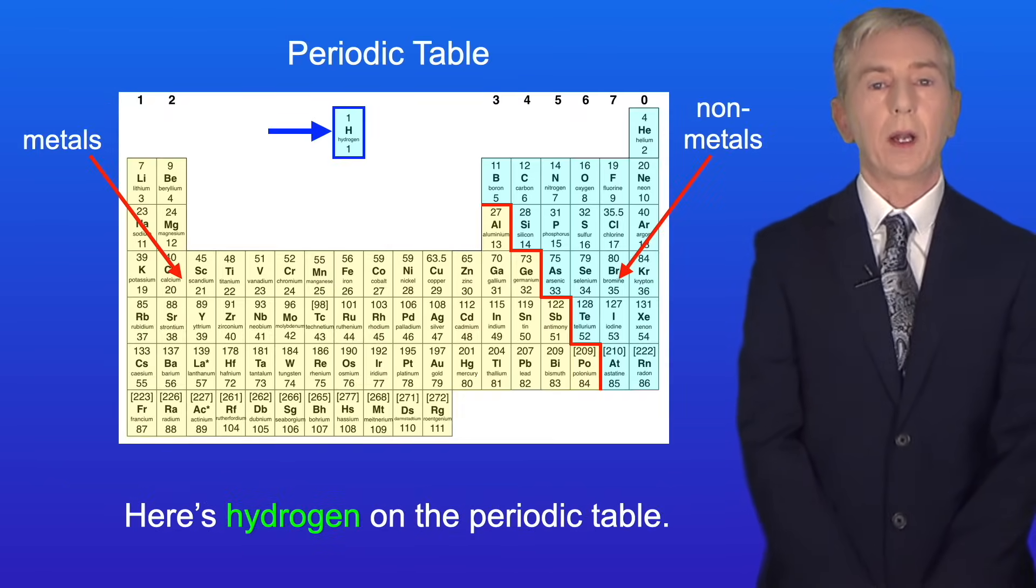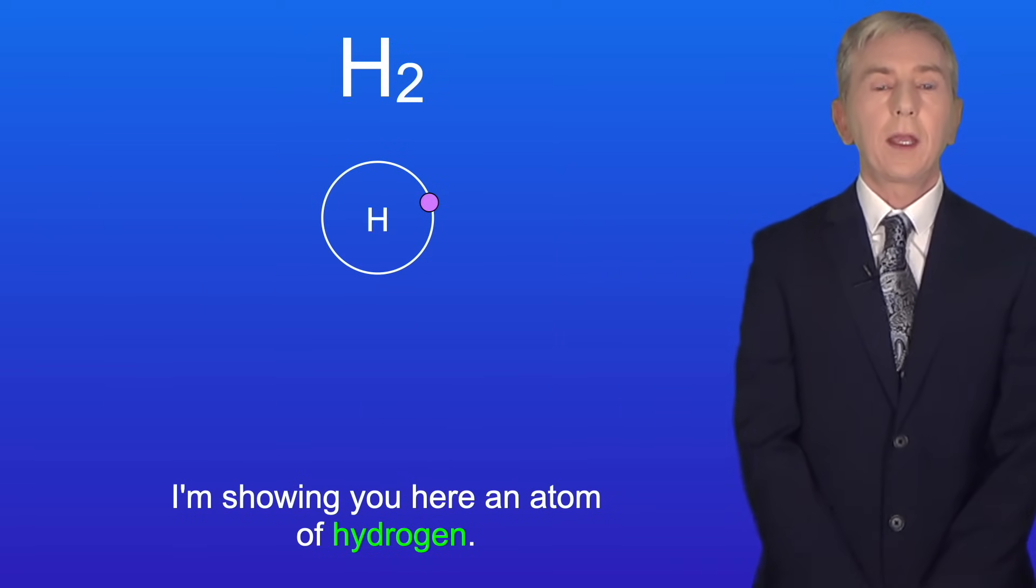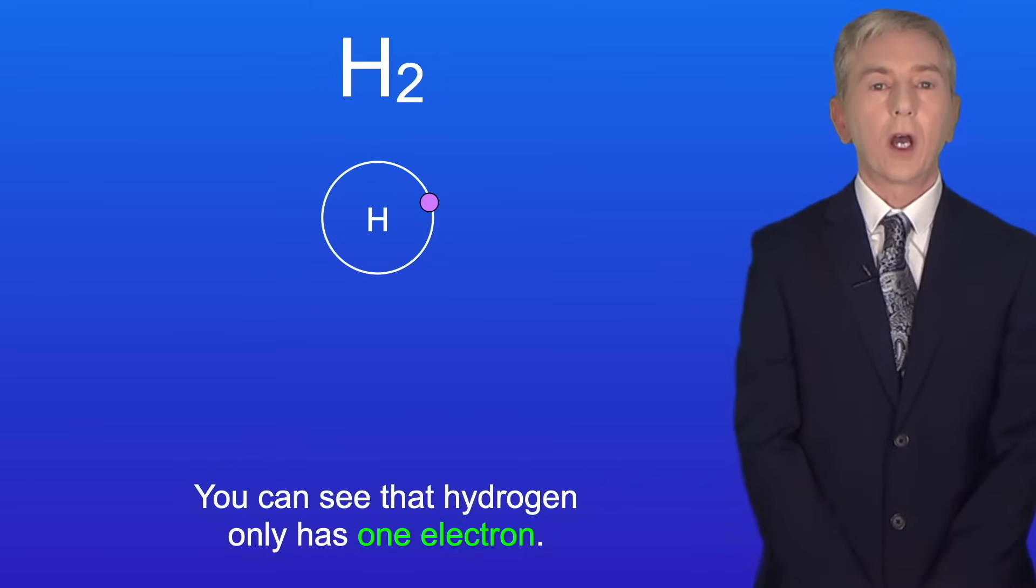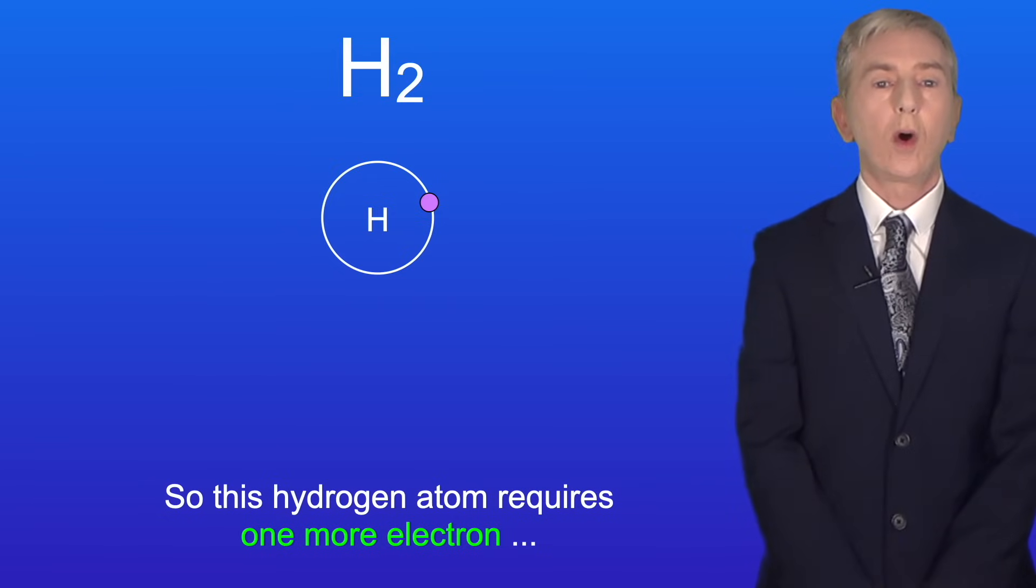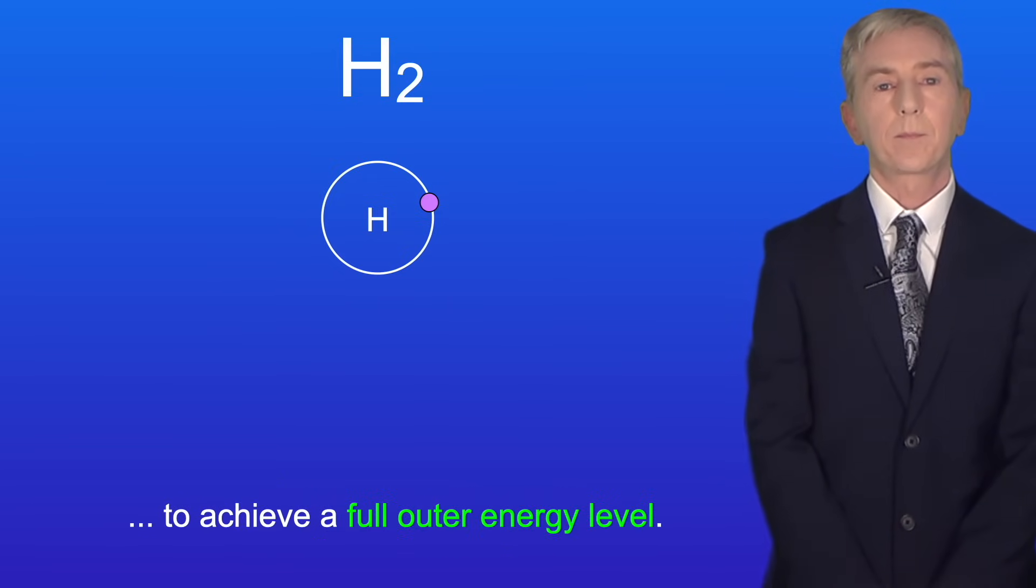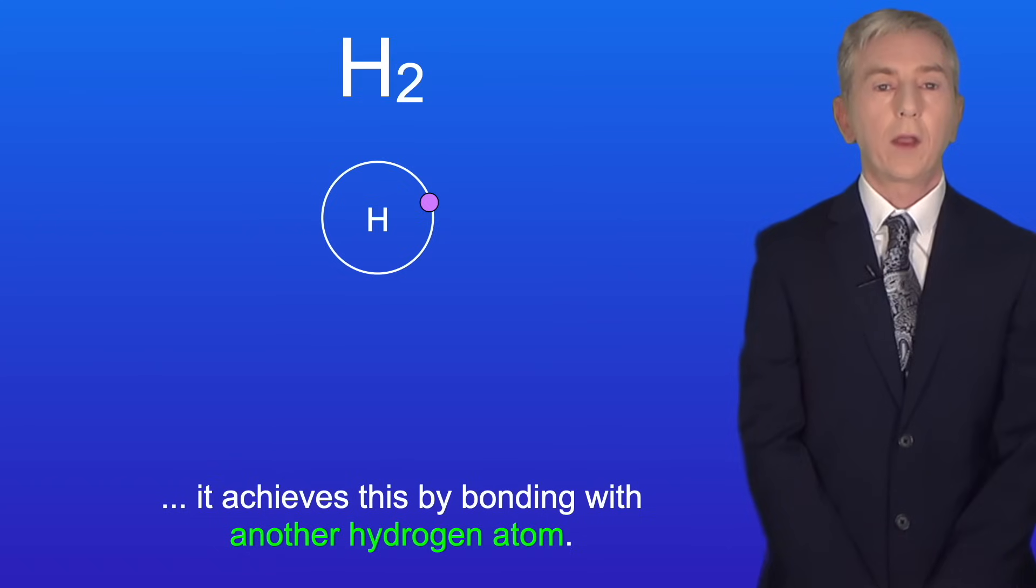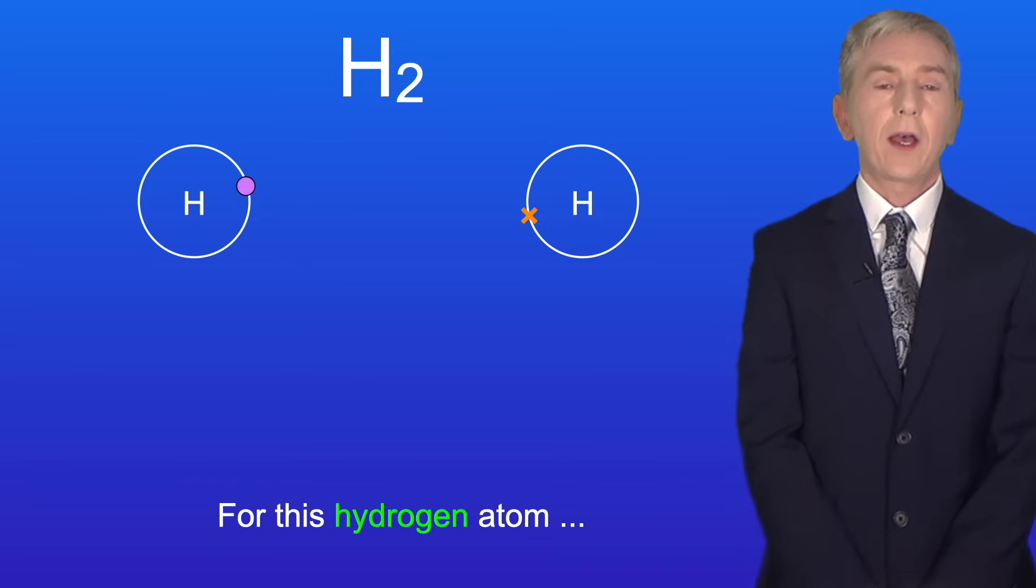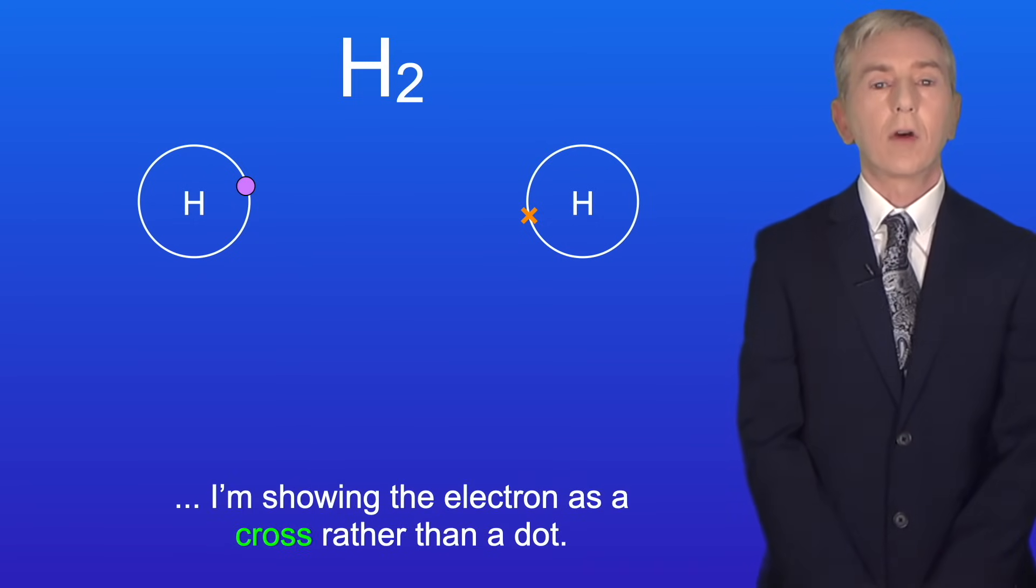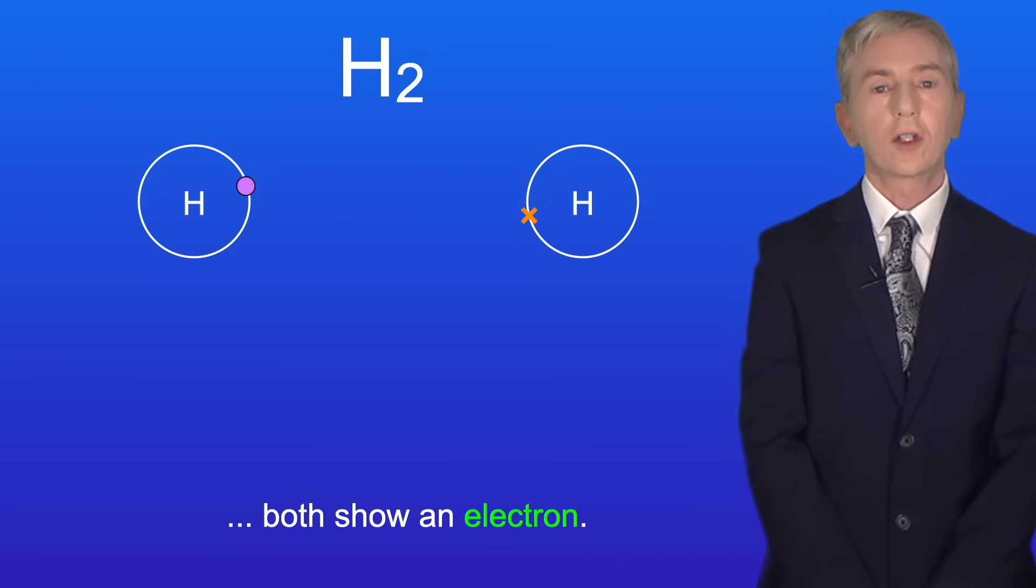Here's hydrogen on the periodic table and we can see that hydrogen is a nonmetal element. I'm showing you here an atom of hydrogen and you can see that hydrogen only has one electron. Now the first energy level can hold a maximum of two electrons. So this hydrogen atom requires one more electron to achieve a full outer energy level. In the case of a hydrogen molecule it achieves this by bonding with another hydrogen atom. So I'm showing you here a second atom of hydrogen. For this hydrogen atom I'm showing the electron as a cross rather than a dot. However you need to remember that dots and crosses both show an electron.